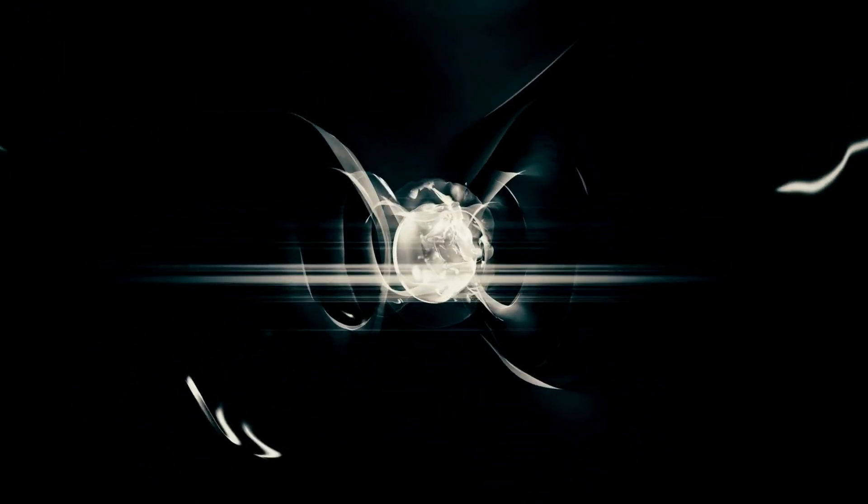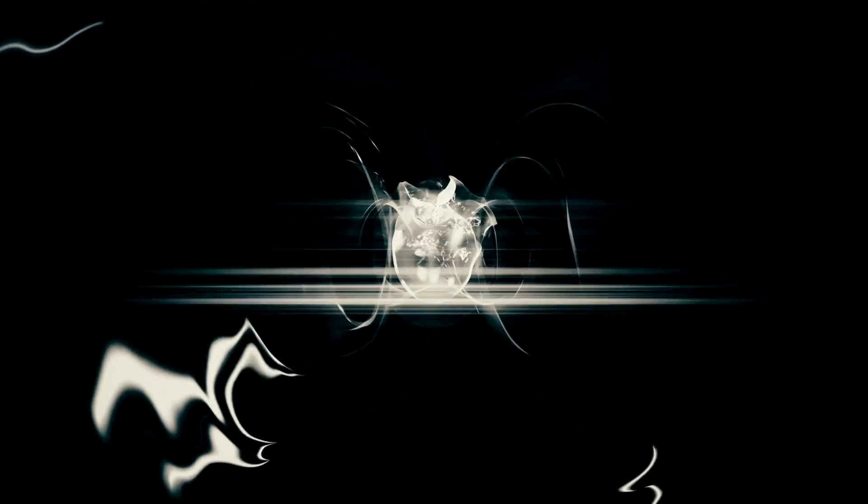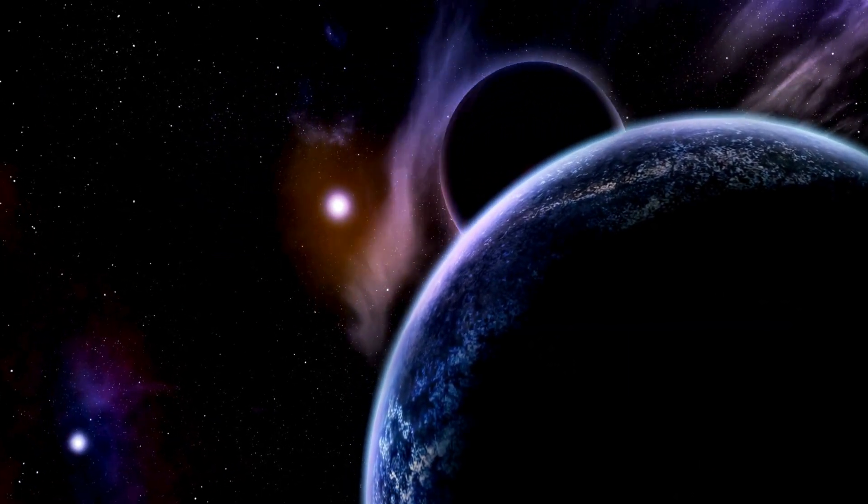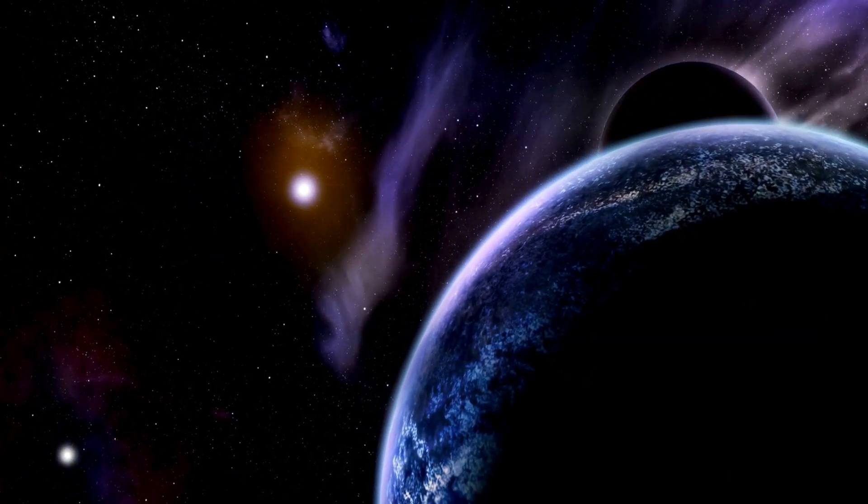Imagine a simple setup: a screen with two vertical slits and a detector screen behind it. Now let's shoot tiny particles like electrons or photons, one at a time towards the slits. You might expect each particle to go through one slit or the other and hit the detector screen, forming two distinct bands corresponding to the slits.